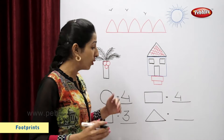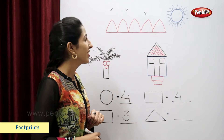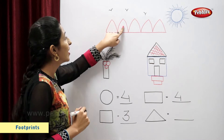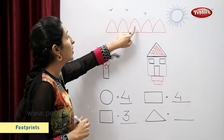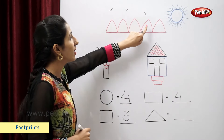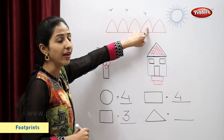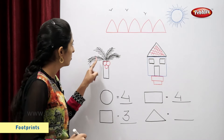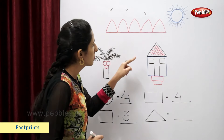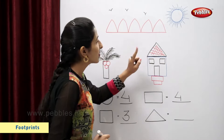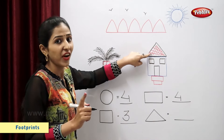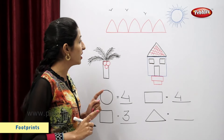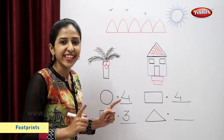Now let's count triangles. One, two, three, four, five. This is a triangle. So six. So there are total six triangles.